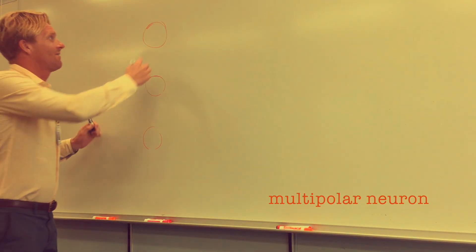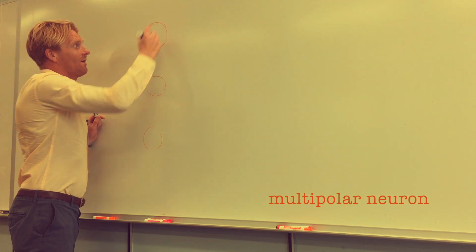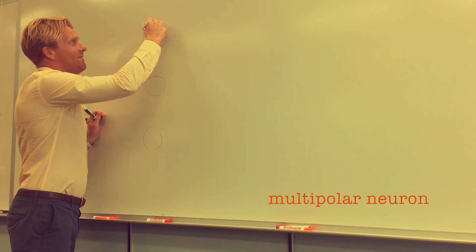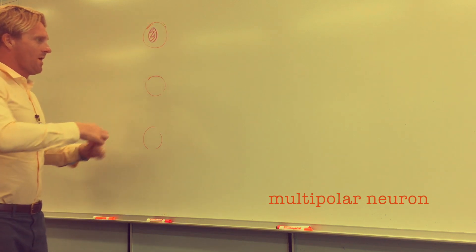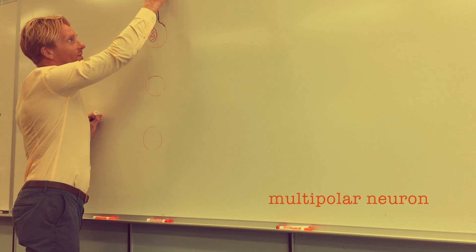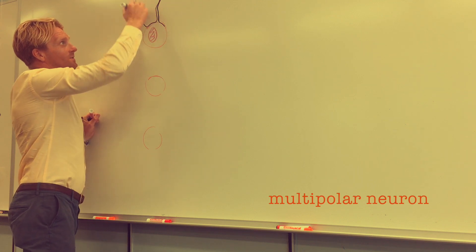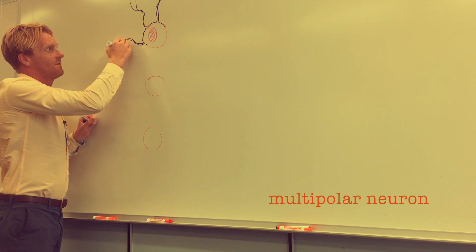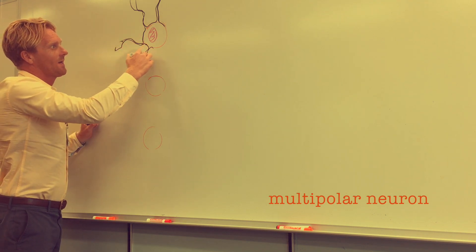What it's going to have is a nucleus in the cell body. Within that nucleus, it's going to have DNA of course. Around that cell body, you're going to have dendrites that extend off. These dendrites are typically pretty short or shorter than the axon. Dendrites extend off the cell body kind of like this.